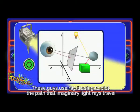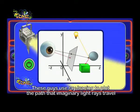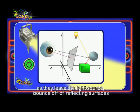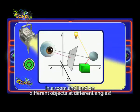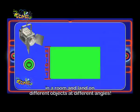3D graphic artists use ray tracing to plot the path that imaginary light rays travel as they leave the light source, bounce off of reflecting surfaces in a room, and land on different objects at different angles.